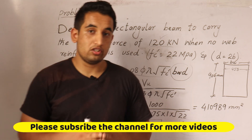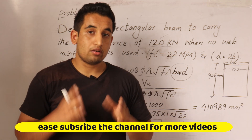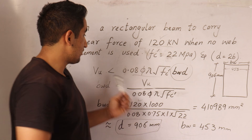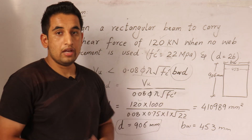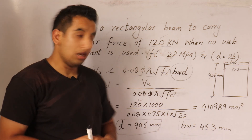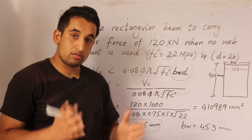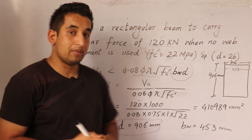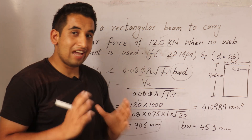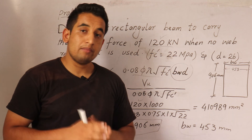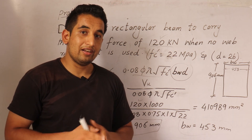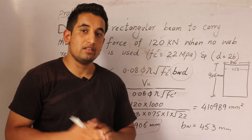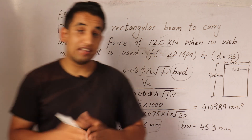This was a short example showing how to calculate the cross-section for shear strength. Similarly, you can also calculate the shear strength of any beam if the cross-section dimensions and 28-day compressive strength are given, and then compare that shear strength with the applied loading. Remember, the applied force should always be less than the strength of the beam — that's how the design is satisfied.